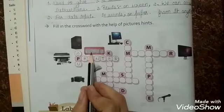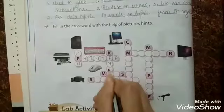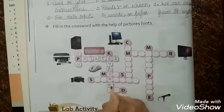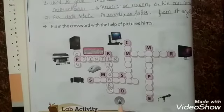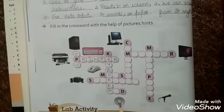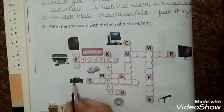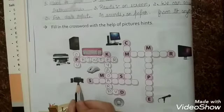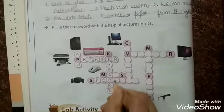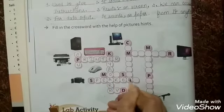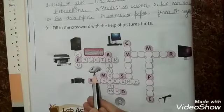This is keyboard — K-E-Y-B-O-A-R-D. Now this is our DVD — D-V-D. Now this is the picture of speakers — S-P-E-A-K-E-R-S. And this is our mouse.